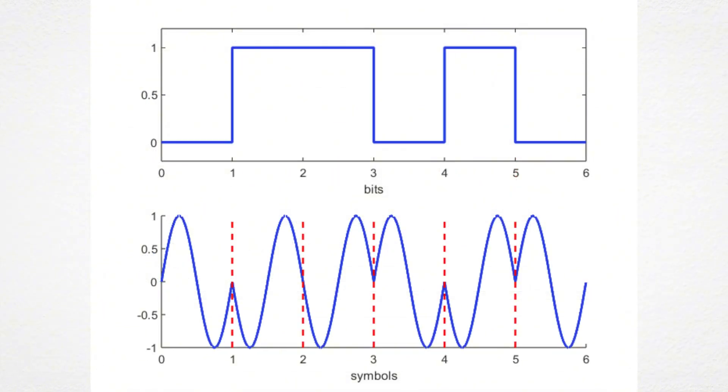As you can see in the plots, whenever the bits change from 0 to 1 or 1 to 0, the phase of the modulated signal shifts by 180 degrees, which is characteristic of BPSK modulation.